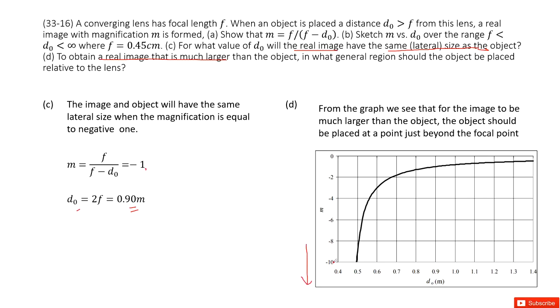So it should tend this way. It goes down. So when the m goes down, the d₀ should be very close to this value, right?